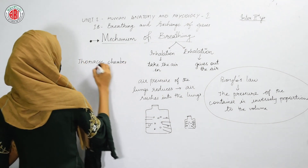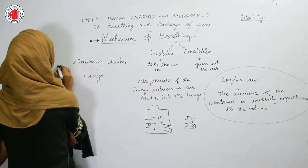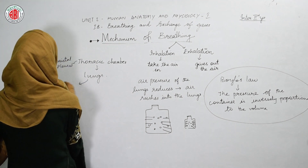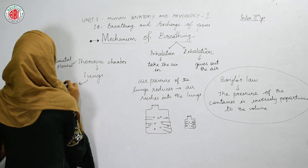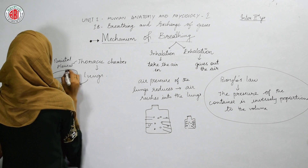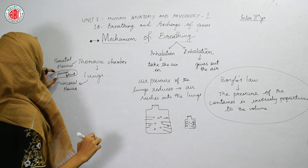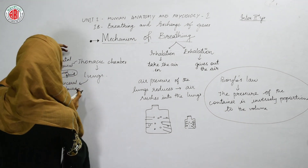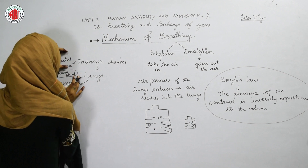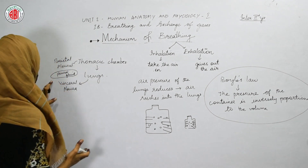In the thoracic chamber, the lungs are present. The walls of the thoracic chamber show parietal pleura and the walls of the lungs show visceral pleura. In between these two, pleural fluid is present. This pleural fluid helps in attaching both structures — the walls of the thoracic chamber and the walls of the lungs are attached to each other with the help of pleural fluid.